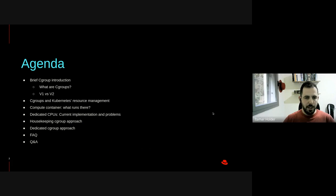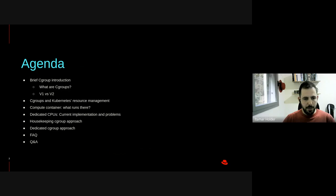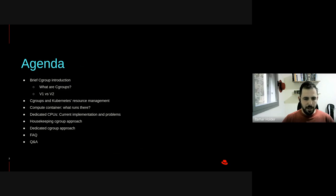So first, the agenda. I'm going to give a brief Cgroup introduction — what are Cgroups, and v1 versus v2. Then we'll look at Cgroups and Kubernetes resource management, which are very much related. Then we're going to inspect the compute container — what actually runs there — and the current implementation of dedicated CPUs and its problems. Then we'll see the housekeeping Cgroup approach to handle this problem, and then the dedicated Cgroup approach, and then sub-FAQ and QR.